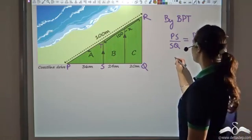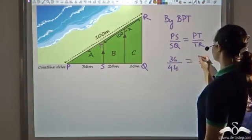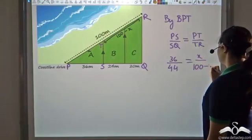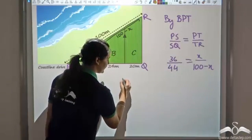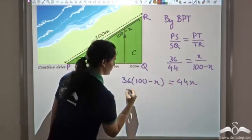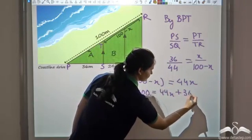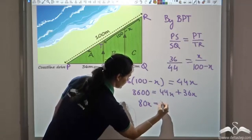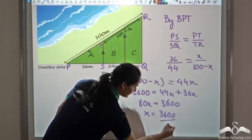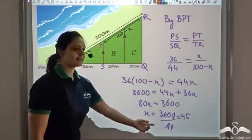Substituting values: PS is 36, SQ is 24 plus 20 which is 44, PT is x, and TR is 100 minus x. Cross-multiplying: 36 times (100 minus x) equals 44x. This gives 3600 equals 44x plus 36x, so 80x equals 3600, and x equals 3600 divided by 80, which is 45. So x, the ocean frontage of plot A, is 45, and the remaining distance is 55.